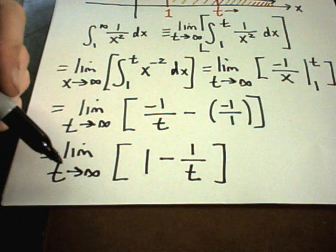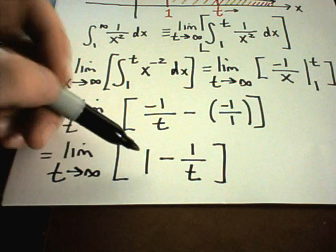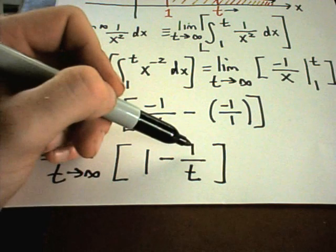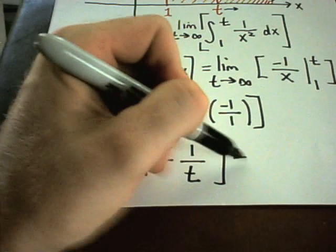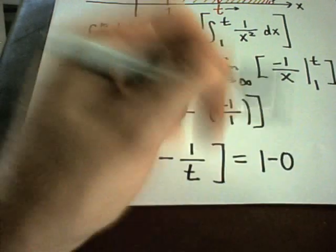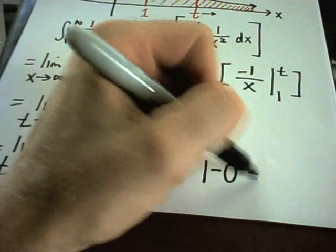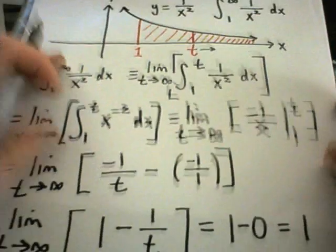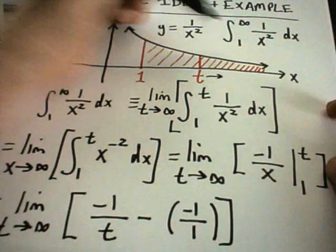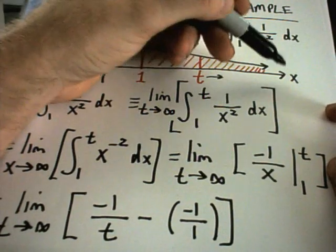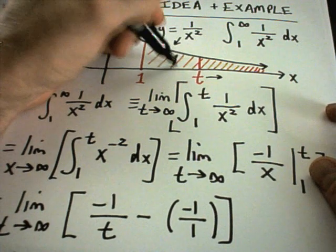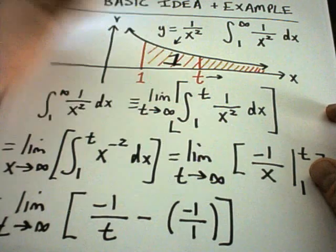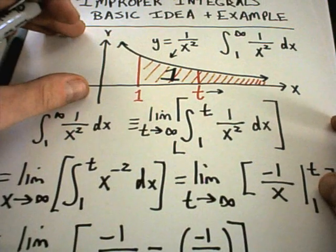So in this case, as t goes to infinity, one stays one. Well, one over infinity, that's one over a big number, this is going to go off to zero. So I'm left with one minus zero or one. So in that sense we can claim the area from one all the way off to infinity underneath the curve one over x squared. This area is actually finite and the finite area turns out to equal one.